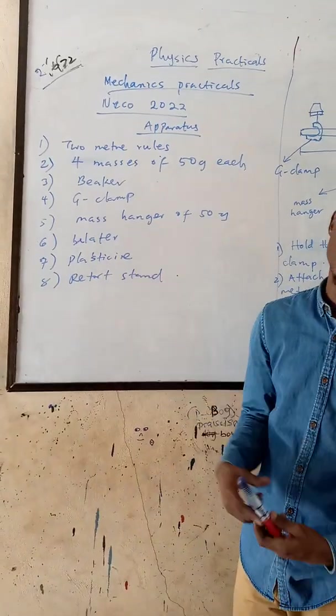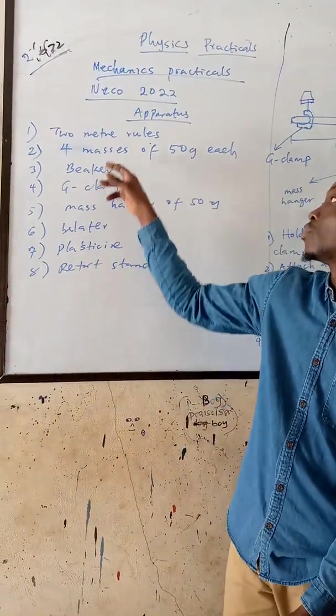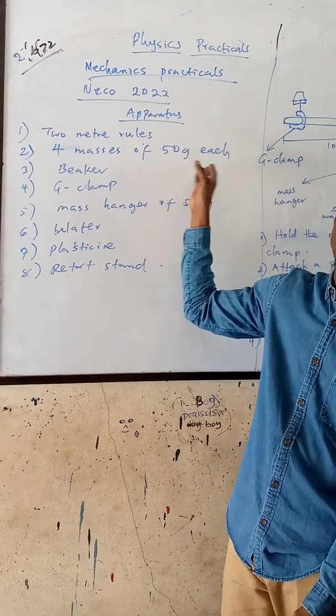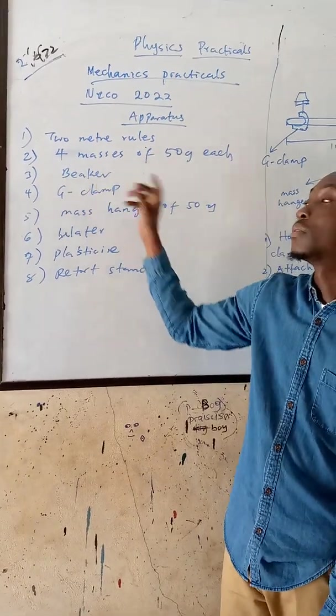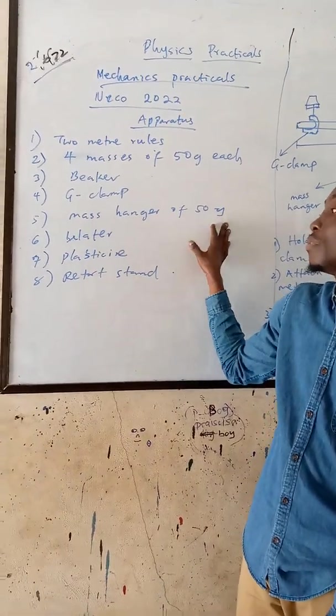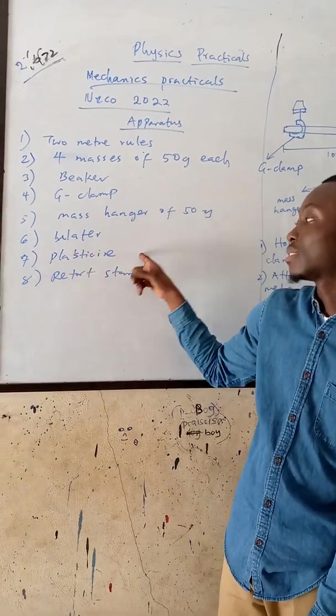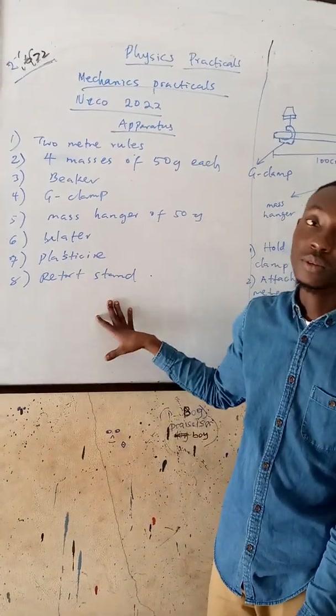So these were the apparatus Niko told us to get. Number one is two meter rules. Number two, four masses of 50 grams each. Number three, beaker. Number four, G-clamp. Number five, a mass hanger of 50 grams. Number six, water. Number seven, plasticine. Number eight, retort stand.